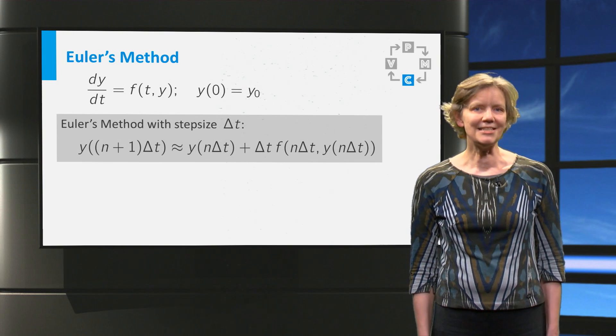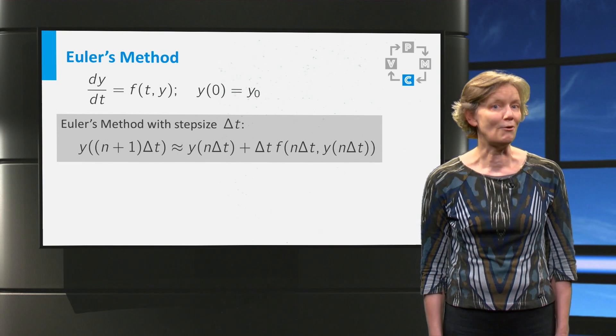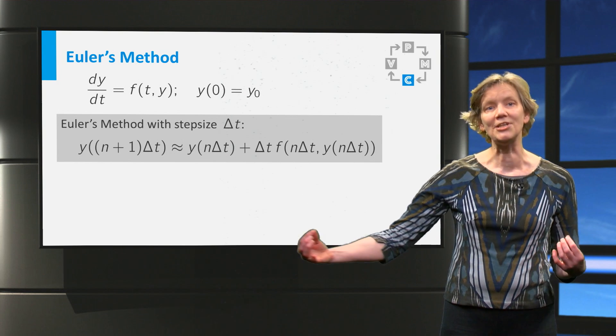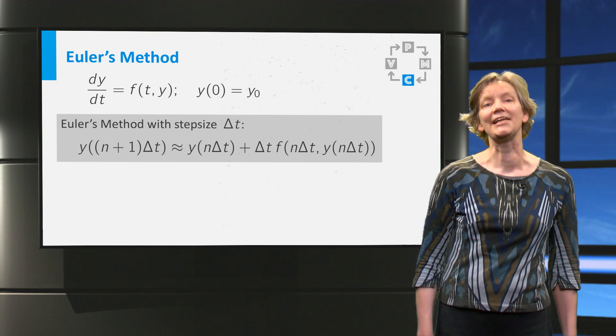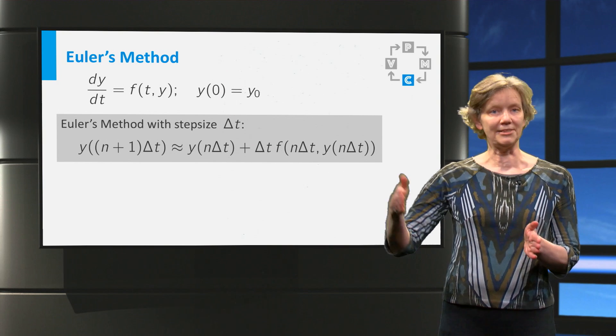Time is discretized in a step size of delta t. So we will not calculate the values of y for all times, as could be done with an analytical method. We estimate y only at multiples of delta t.